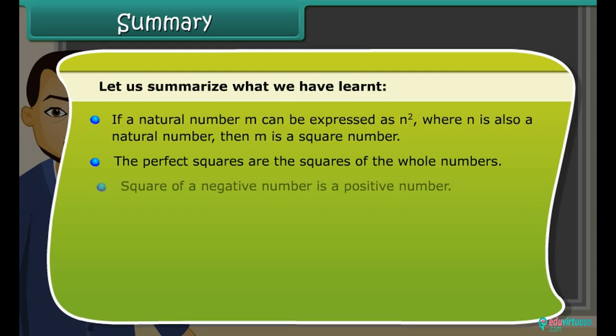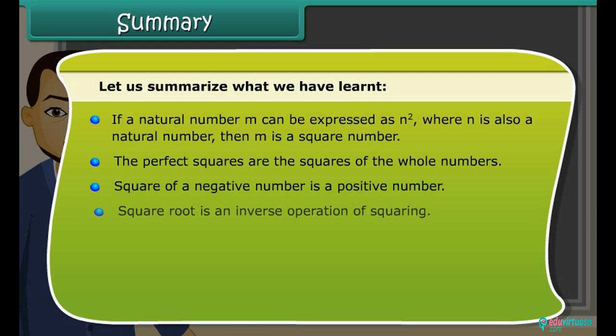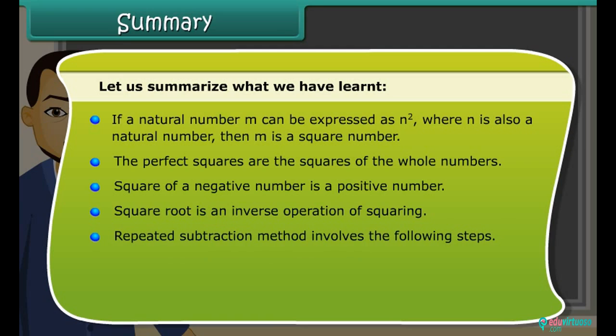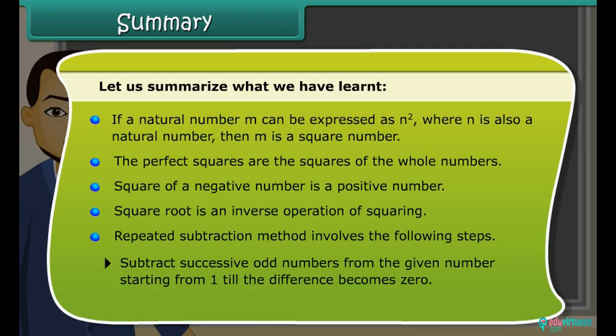Square root is an inverse operation of squaring. Repeated subtraction method involves the following steps: Subtract successive odd numbers from the given number starting from 1 till the difference becomes 0. Count the number of steps it took to get the difference as 0.